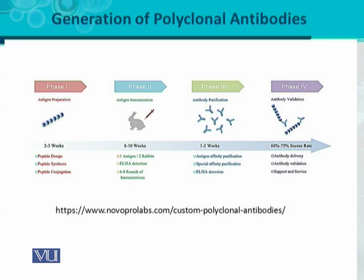The third phase is antibody purification, which can also last for one to two weeks. In this phase, purification is carried out based on the antigen's affinity — antibodies are purified using affinity chromatography. Affinity purification processes are applied, and ELISA is used for detection of those purified antibodies.